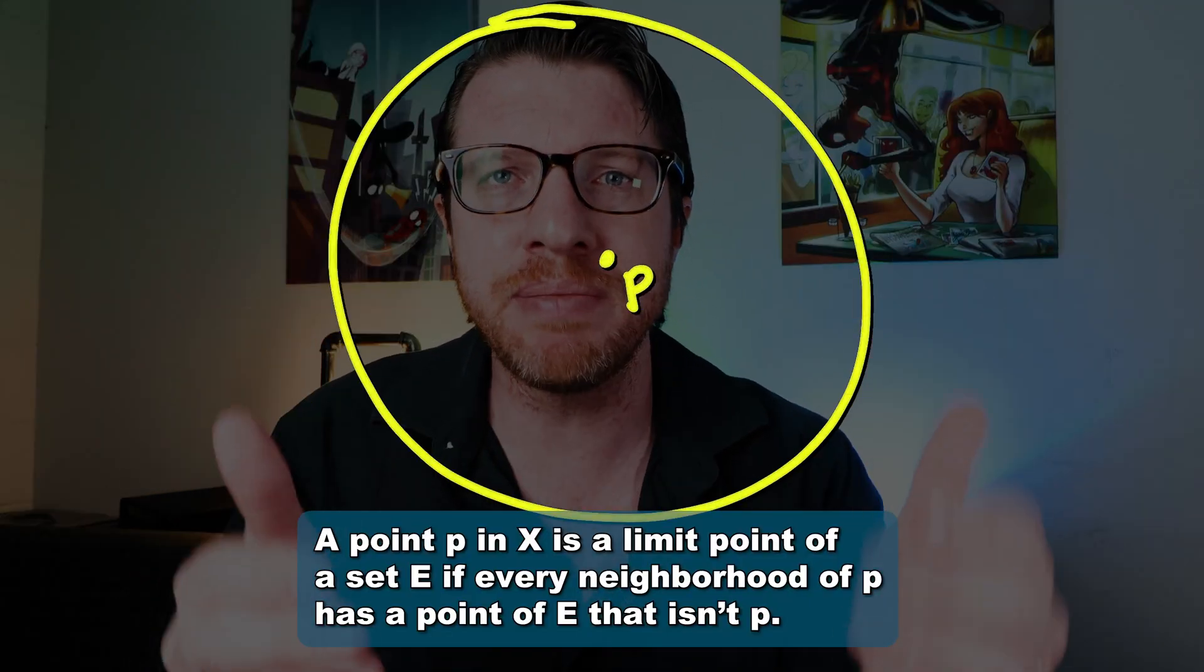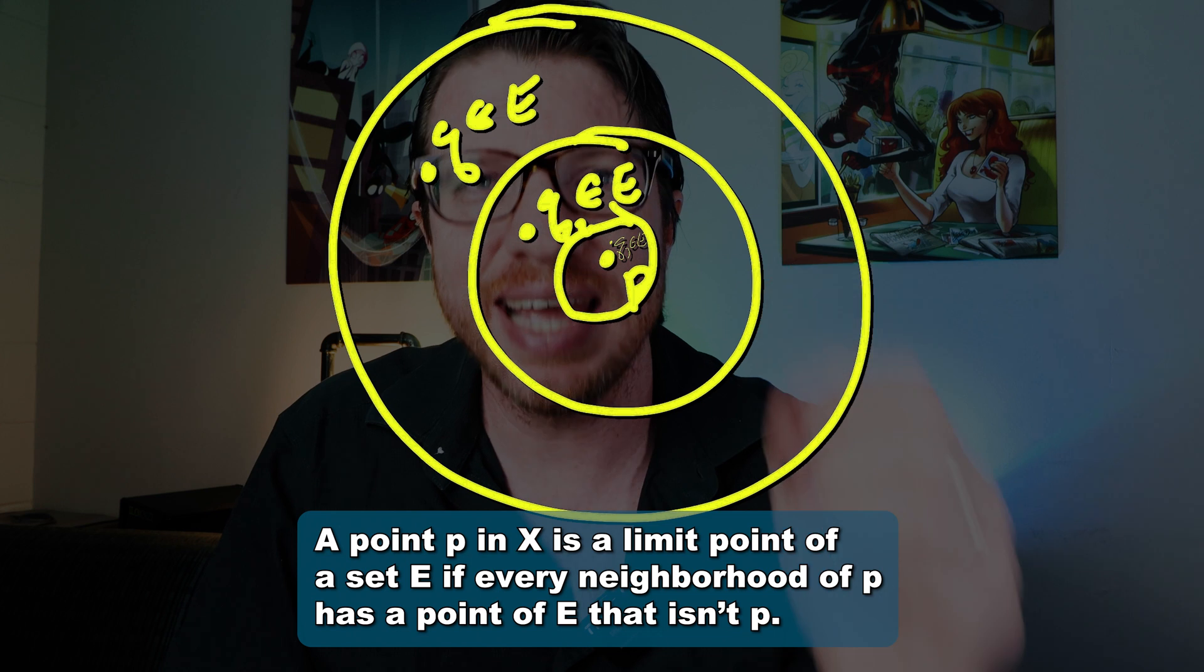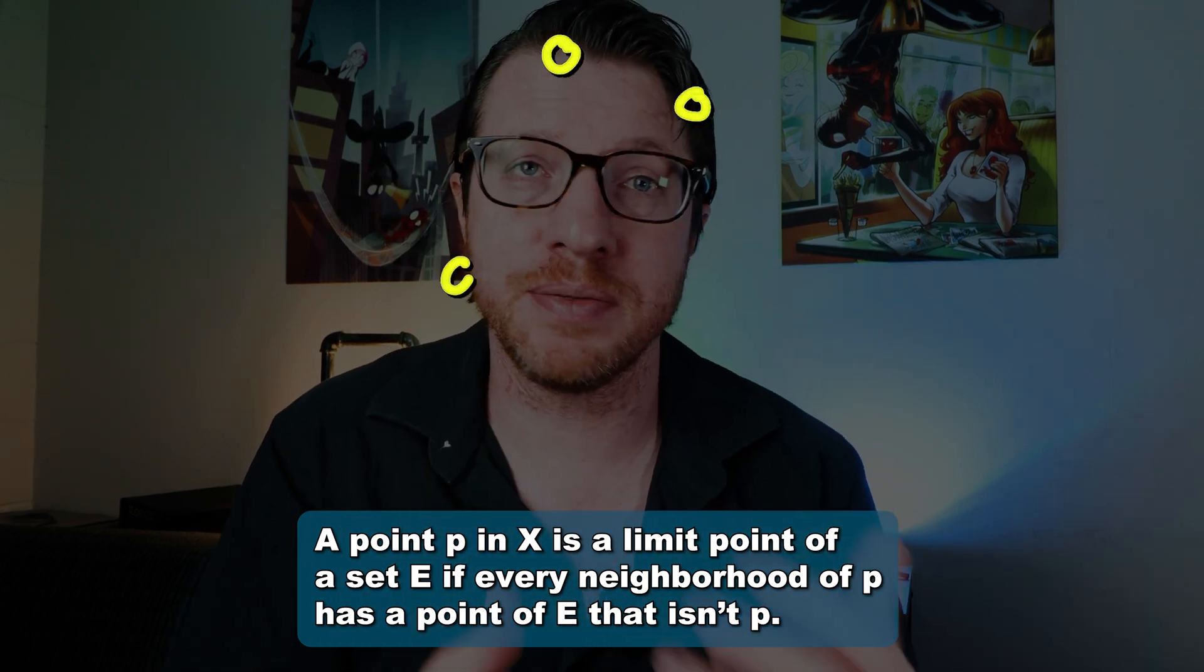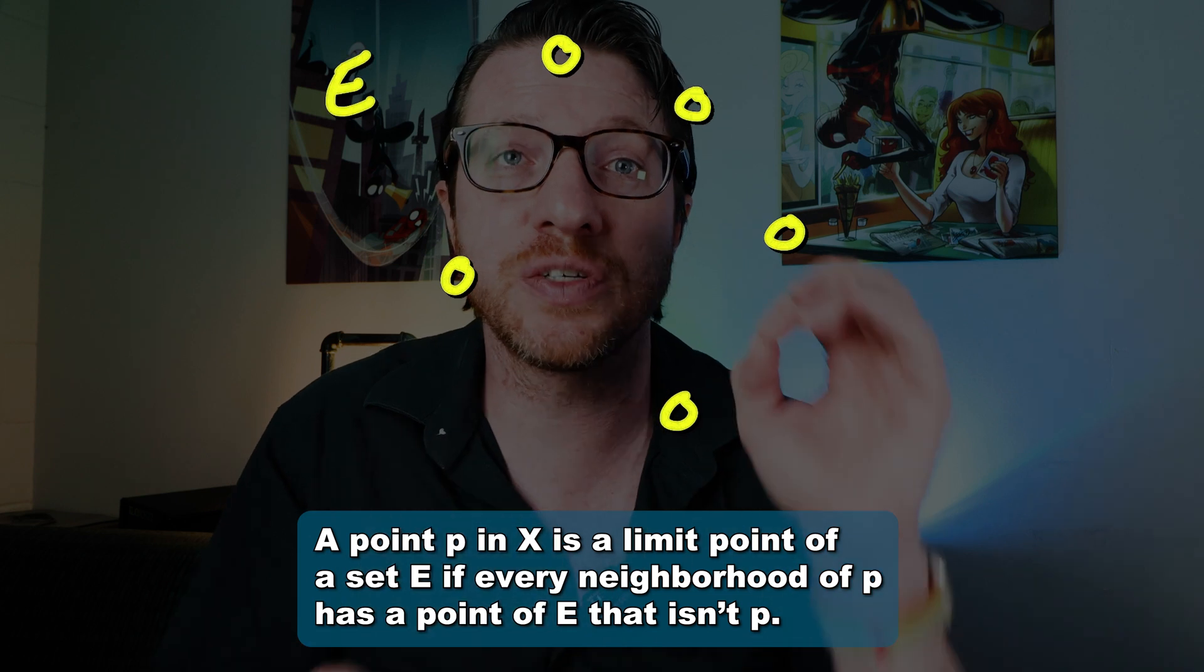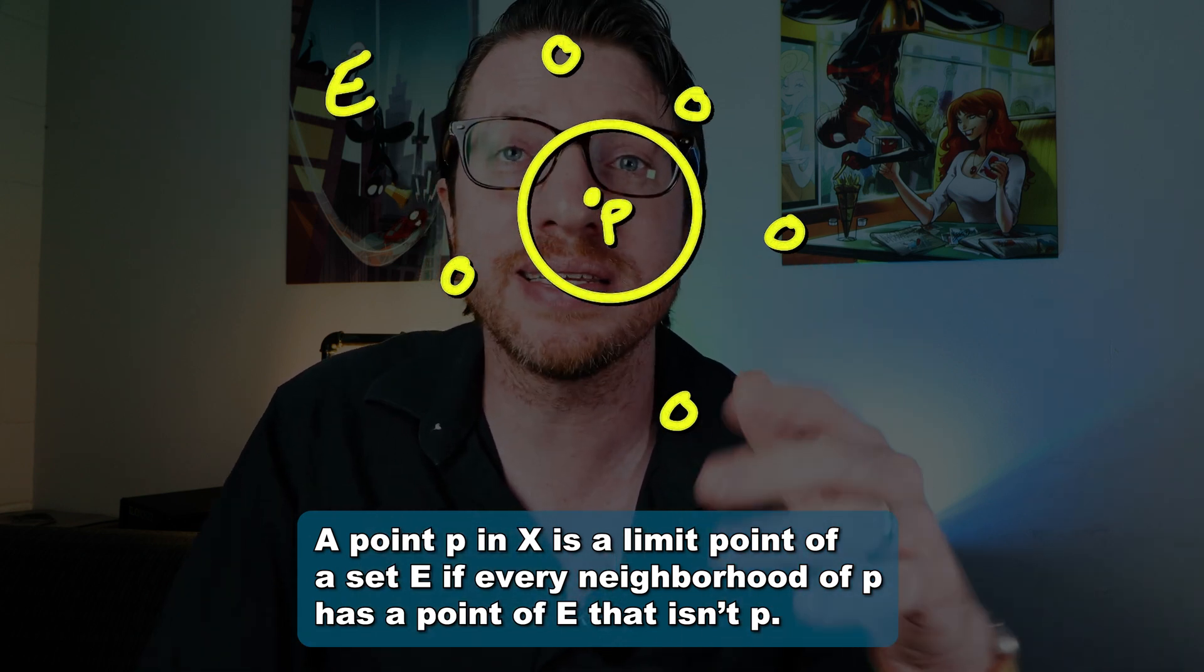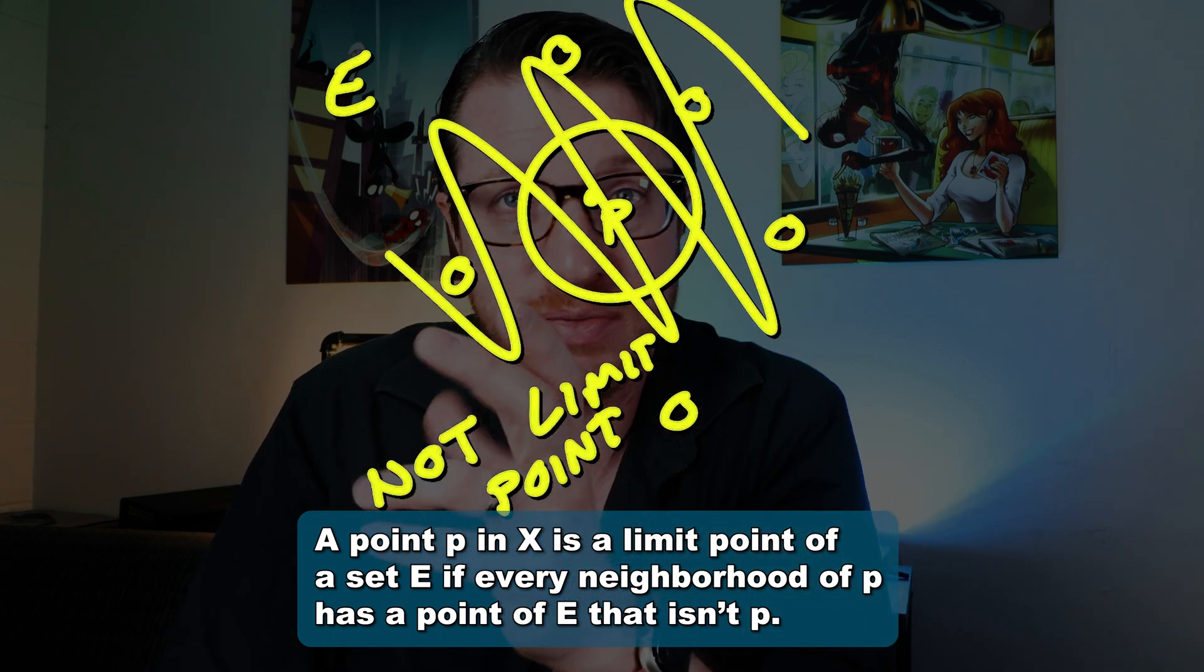And this is how they're defined in topology. A point p in X is a limit point of a set E if every neighborhood about p has a point in E that isn't p. If E was finite, then for any point p in X, we can find a smallest distance between p and all of those points in E. And we can select the radius smaller than any of those to make a neighborhood that's disjoint from E. So if a set has a limit point, it can't be a finite set.